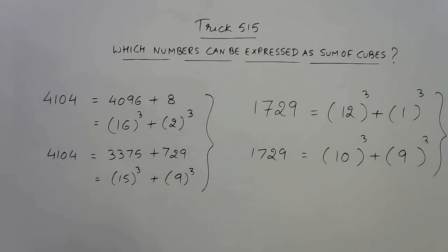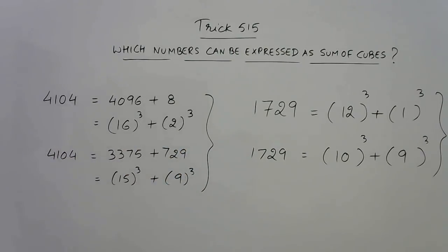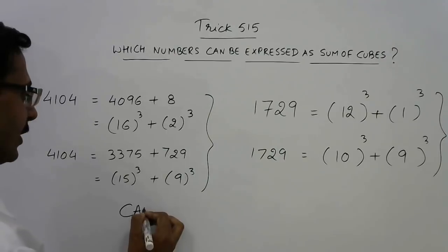So you see, this number 4104 is another such number which can be expressed as sum of two different natural numbers cubed. So these are two numbers. So can you find out the third number?